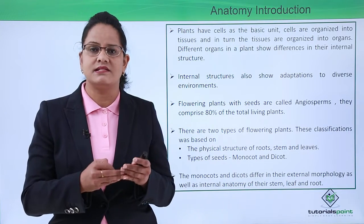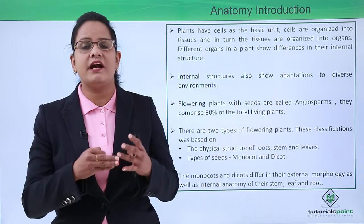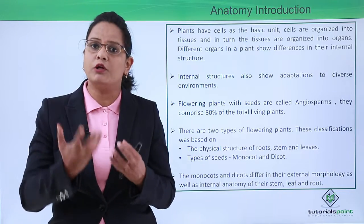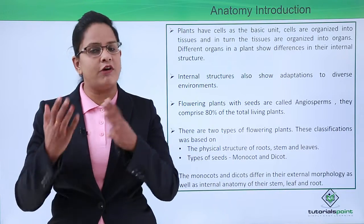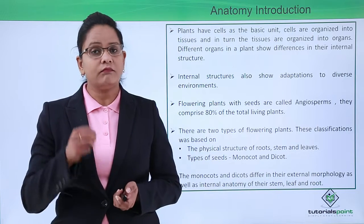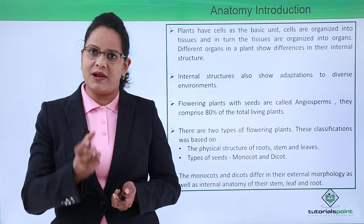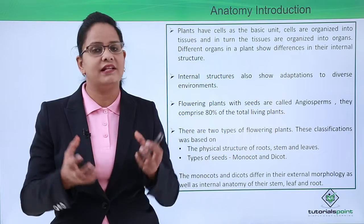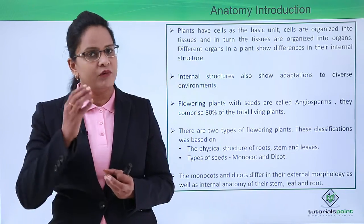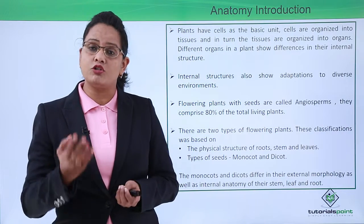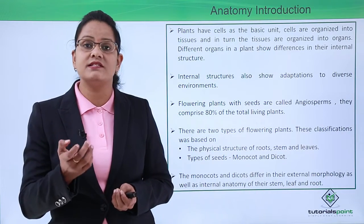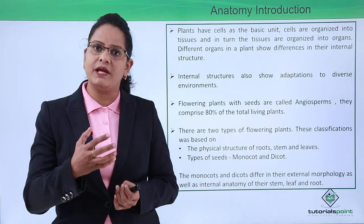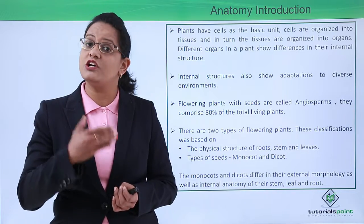In animals or human beings there are different types of cells — muscle cells, skeletal cells, bone cells, cardiac cells, nerve cells. These different types of cells aggregate together to form tissues, then organs, and ultimately lead to the function of a particular organ. Similarly, in plants, the plant cell is the basic unit. The same types of cells aggregate together to form plant tissues, and different types of plants have different types of cells that help them in adapting. Ultimately, cells are the ones responsible for function.